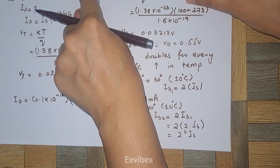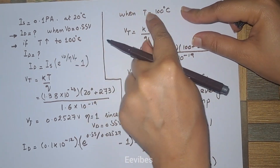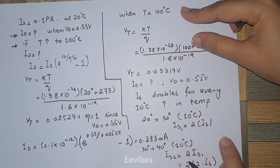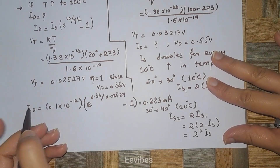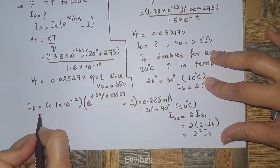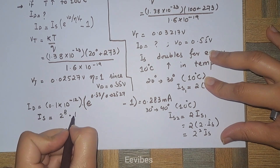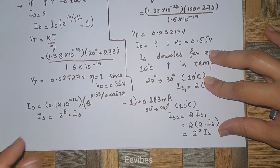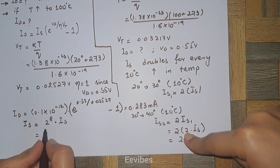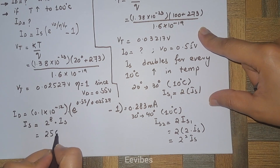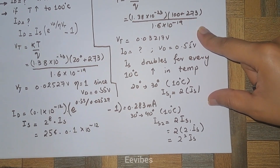Going from 20 to 100 degrees centigrade, there is a temperature increase of 10 degrees 8 times. So the updated value of IS to use with the increased temperature is 2^8 times the previous IS value. Simplifying, this equals 256 × 0.1 × 10^(−12).